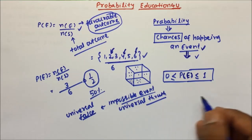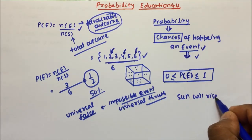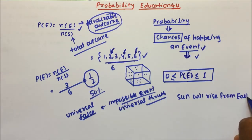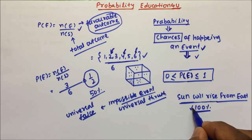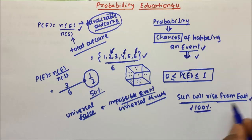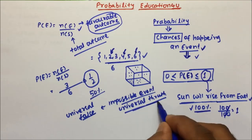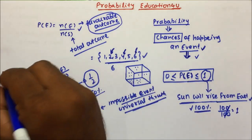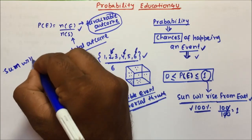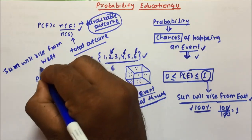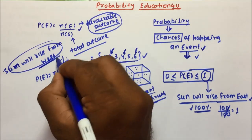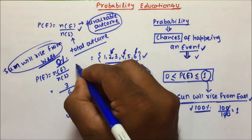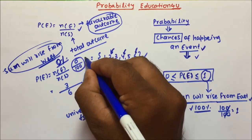If I say the sun will rise from the east — what is the probability that the sun will rise from the east? The probability will be 100 percent, because this is a universal truth; the sun always rises from the east. 100 percent is 100 by 100, which equals 1. So probability equals 1 for universal truths. Now, what is the probability that the sun will rise from the west? The probability will be 0 percent, because this is a universal false — everybody knows the sun rises from the east, so sun rising from the west is 100 percent false. 0 percent is 0 by 100, which equals 0.